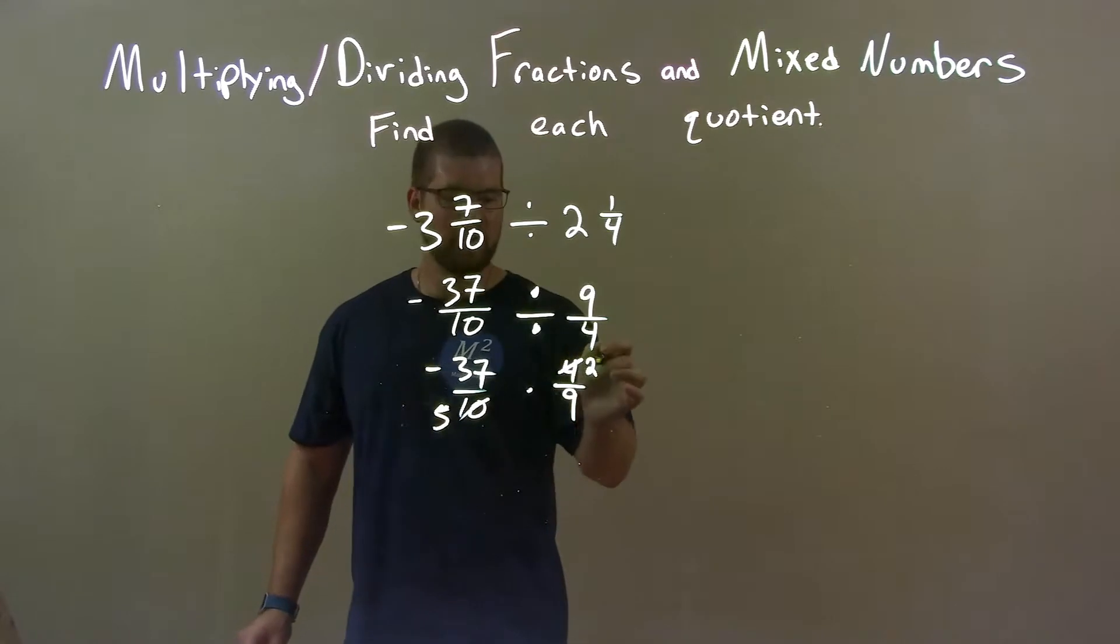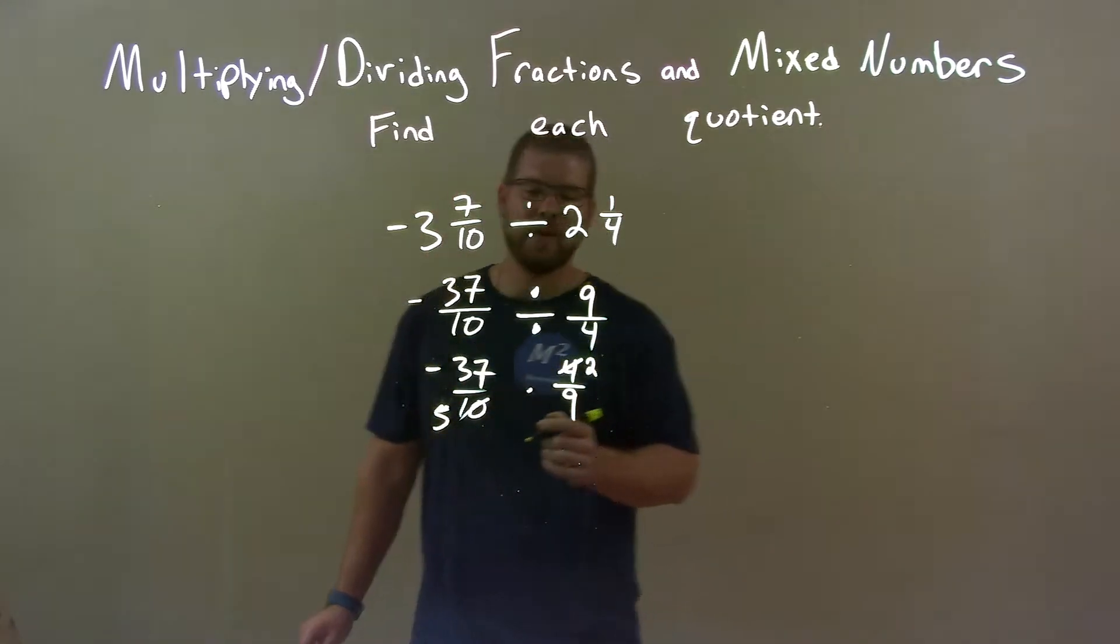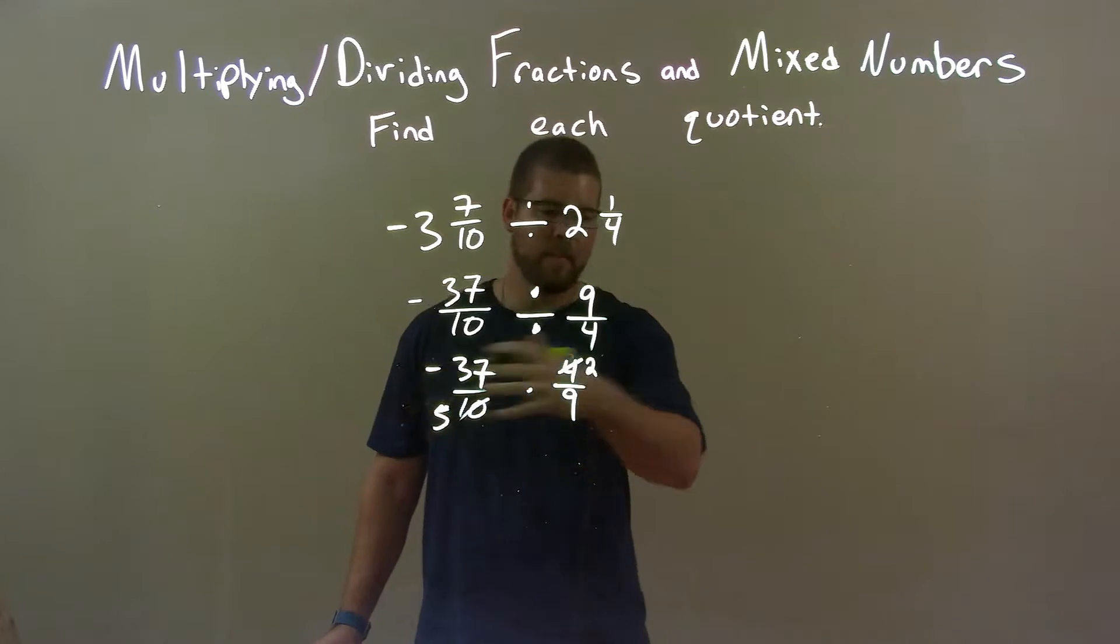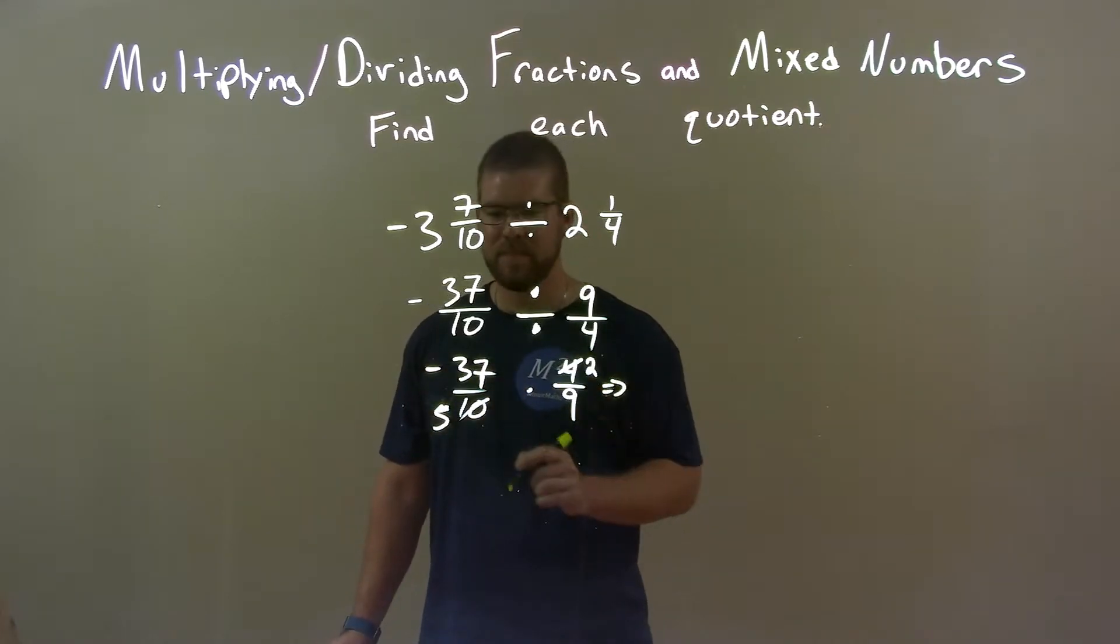So 4 divided by 2 is 2, and 10 divided by 2 is 5. So now let's go see if we can multiply this out. Negative 37 times 2.